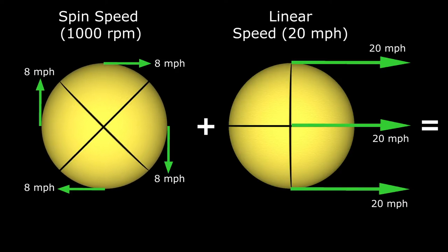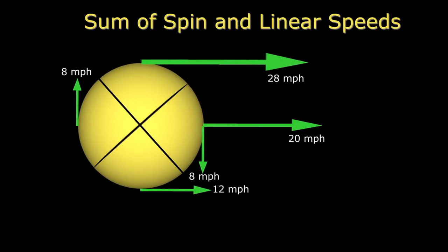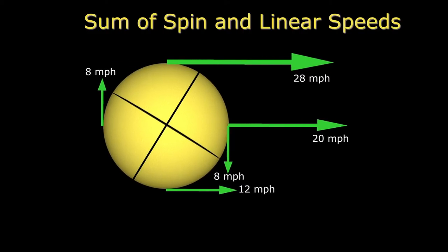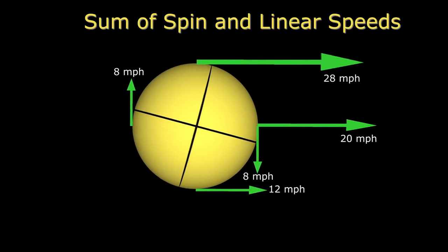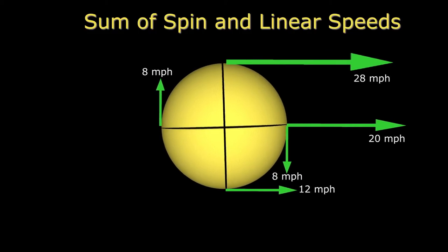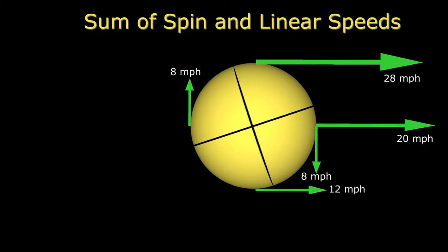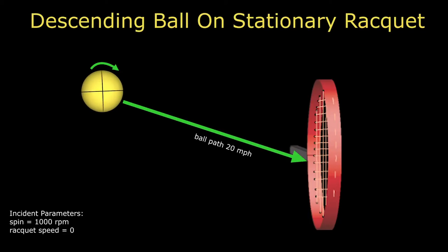Adding together the spin speed and the linear speed can give interesting and sometimes wildly unexpected contact velocity results. These results will differ depending on whether the relative path is descending, ascending, or perpendicular to the string bed.